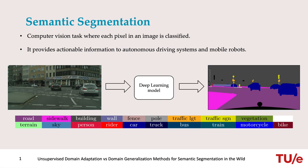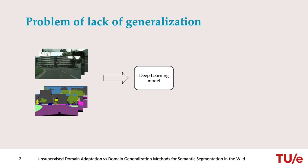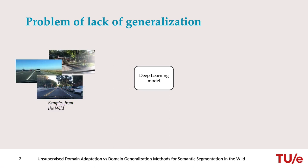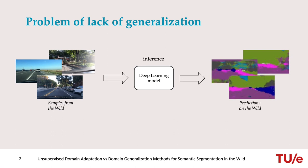When sufficient labeled data is available, semantic segmentation models are able to perform quite well on samples that are similar to the training data. However, when they encounter images captured under different conditions, such as different lighting or camera position, the performance becomes severely affected.